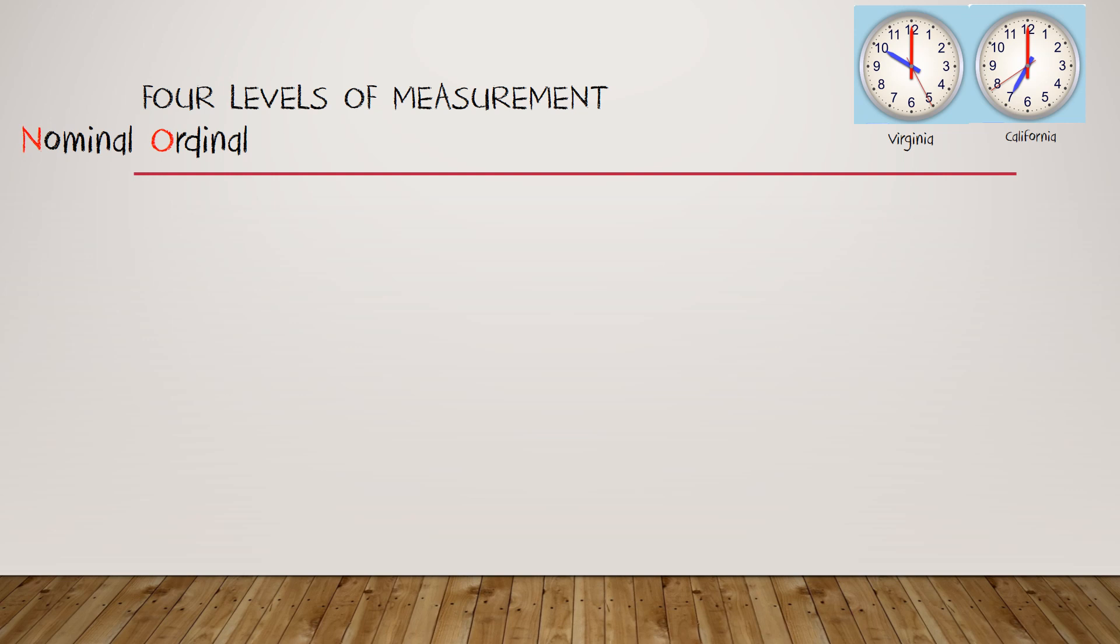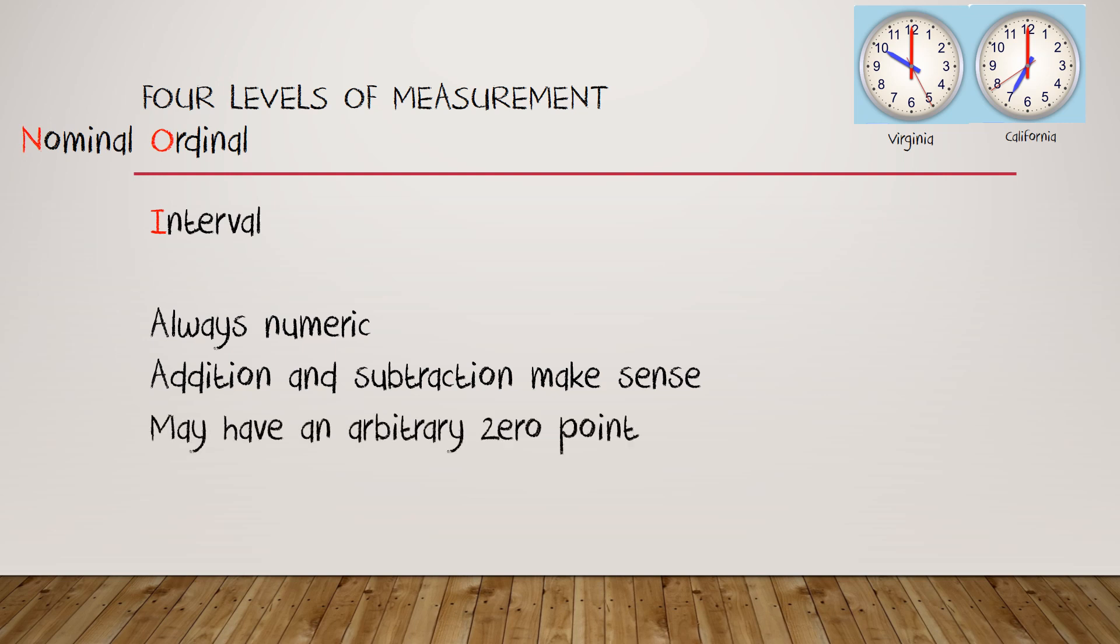The third category is going to start with what letter? Well, if you remember noir, it's going to be I, and that stands for interval. As we said, interval data is always numeric, and if you think about our clock example, you'll understand why it's true that I can say that addition and subtraction always makes sense with interval data. But interval data doesn't have a natural zero point. For example, Virginia and California disagree about when to start the clock, and because of that, multiplication and division generally don't make sense.